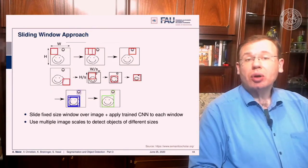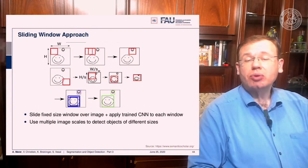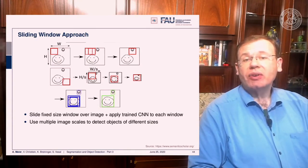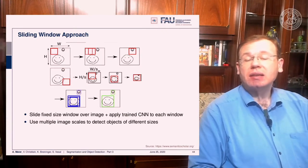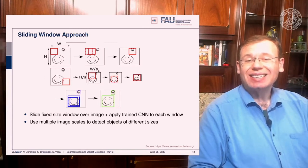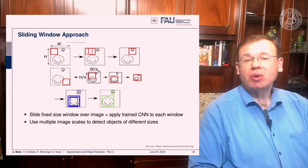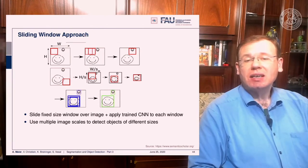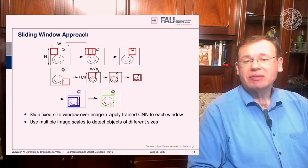With the sliding window approach, you take your pre-trained CNN and move it across the image — when you find an area of high confidence, you declare a detection. The big disadvantage is that a face could appear at different resolutions, so you must repeat the process at multiple scales. This results in a very large number of patches requiring a large number of classifications.